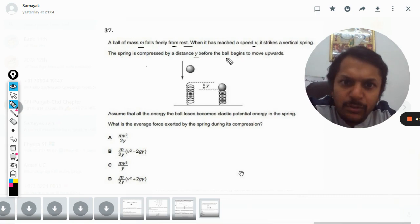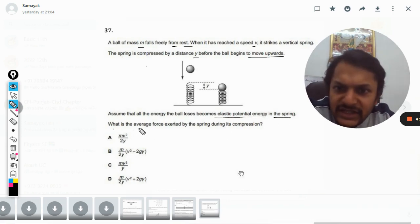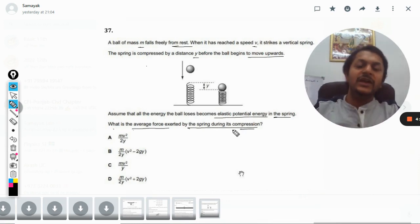The spring is compressed by a distance y before the ball begins to move upwards. Assume that all the energy the ball loses becomes elastic potential energy in the spring. What is the average force exerted by the spring during its compression?